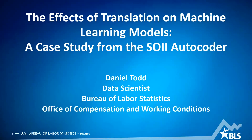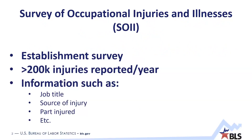Thank you, Emily. My name is Danny Todd. I'm a data scientist working in the Office of Safety, Health and Working Conditions for the Bureau of Labor Statistics. I'm here to talk to you today about a case study we performed on the SOII autocoder. The SOII is an establishment survey annually collecting written descriptions of over 200,000 work-related injuries and illnesses each year. These descriptions include information regarding job titles, what workers were doing when an injury occurred, and so on.